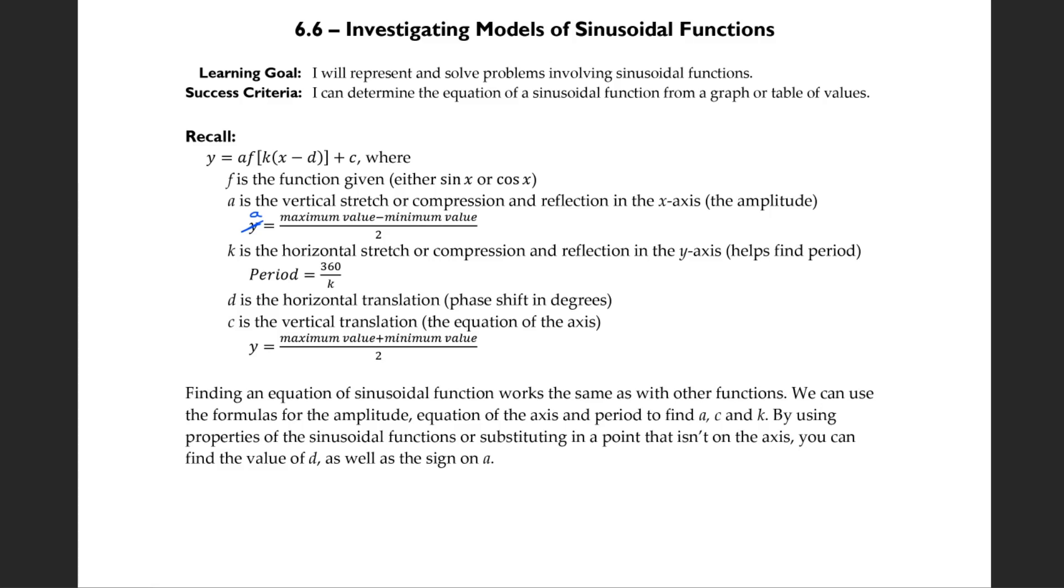d is the horizontal translation, or phase shift in degrees, while c is the vertical translation, the equation of the axis, and it's given as y equals maximum plus minimum divided by 2.